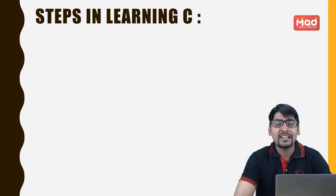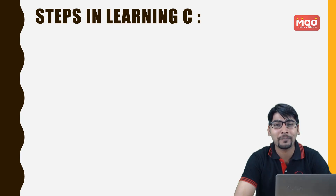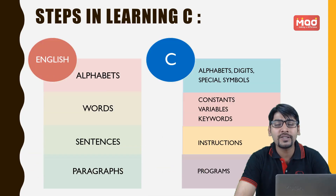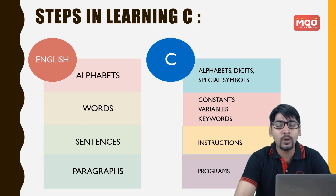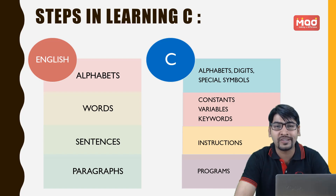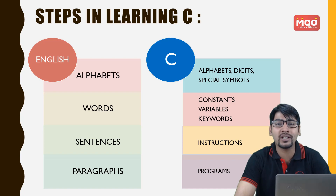Friends, the steps involved in learning C are similar to the steps that we have learned our basic English language. First, during learning English, we have studied the basic alphabets. We all know when the alphabets are combined together they make words, and when these words combine together,